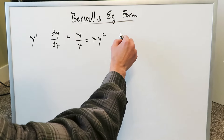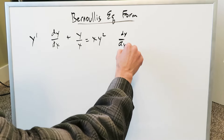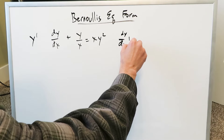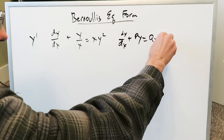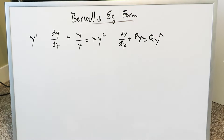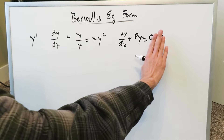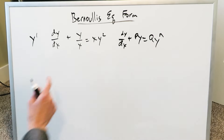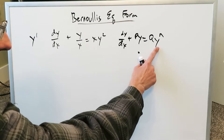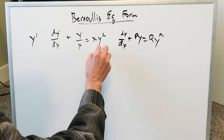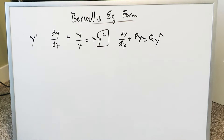Why is it Bernoulli's form? Because you have something which looks like dy/dx plus py is equal to q times y to the power of n. In the absence of that y to the power of n, just with q here, you would be looking at your basic linear first order differential equation. But the presence of this y to the n factor makes it a Bernoulli's form of equation, and you have to solve it accordingly.